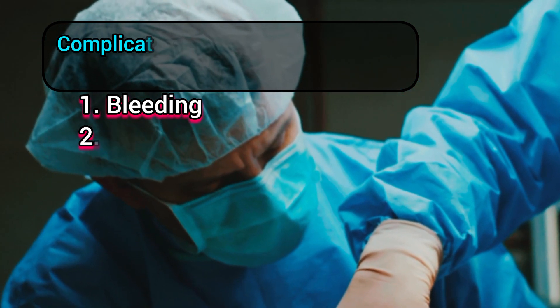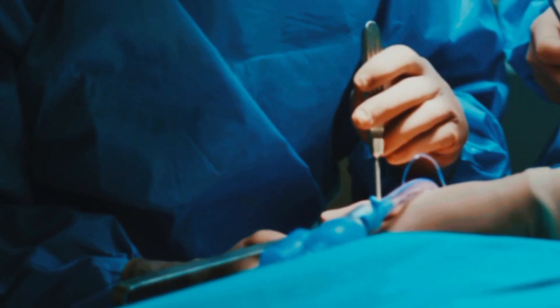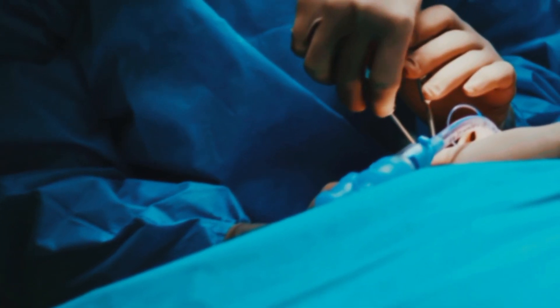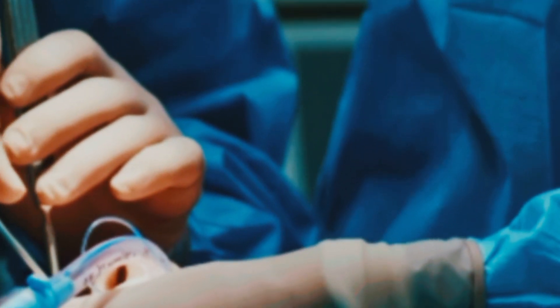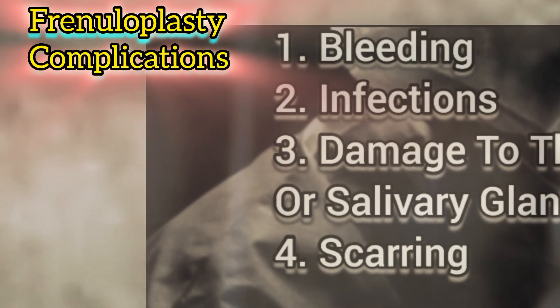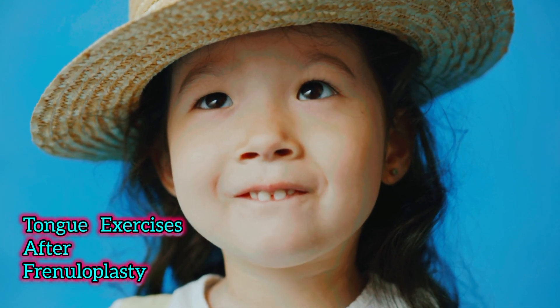Number two, a frenuloplasty: frenuloplasty is a more extensive procedure that may be recommended if additional repair is needed or the lingual frenulum is too thick for a frenotomy. A frenuloplasty is done under general anesthesia. After the frenulum is released, the wound is usually closed with absorbable sutures. Possible complications of frenuloplasty are similar to those of the frenotomy and are very rare, including bleeding, infection, damage to the tongue or salivary glands, and scarring. After a frenuloplasty, tongue exercises may be recommended to enhance tongue movements and reduce the potential for scarring.